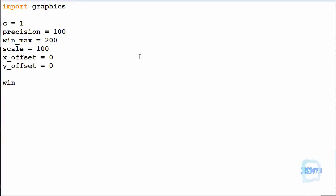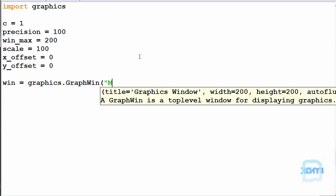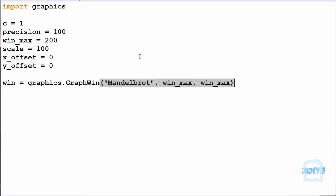Now we can create our graphics window. Win equals graphics.GraphWin and we'll call it Mandelbrot. I hope I've spelled that right. And we'll initiate these by being the window max and the window max because we want a square window. So by doing this we're going to have a 200 by 200 window so we can change it when we'd like.